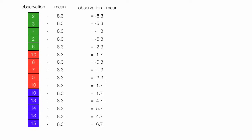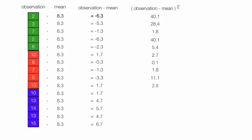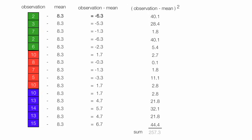Now I take negative 6.3 and square it, so I take each observation minus the mean and square it. That equals 40.1. Negative 5.3 squared equals 28.4, negative 1.3 squared is 1.8, and I'll fill in the rest. Now I take all these values and sum them up, which equals 257.3. This is total sum of squares, or SST, and it equals 257.3.